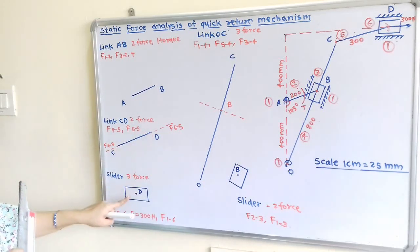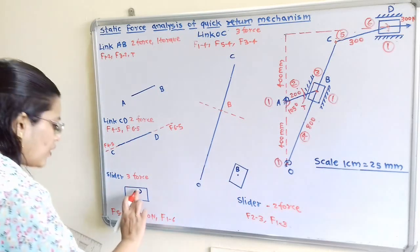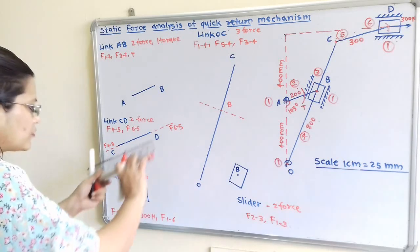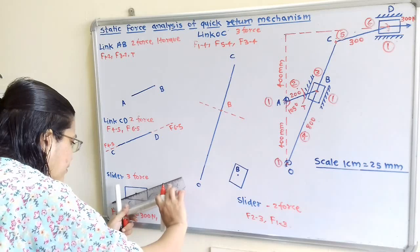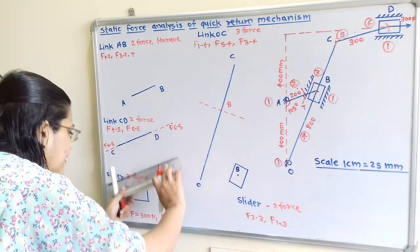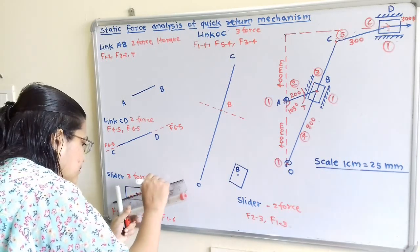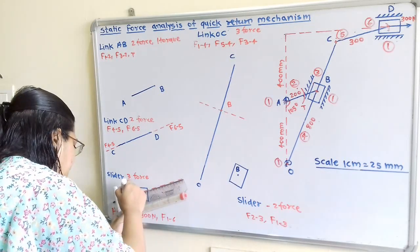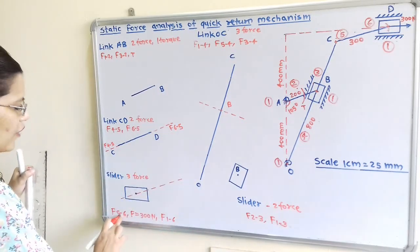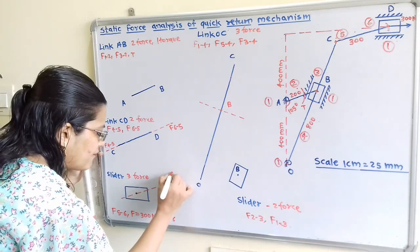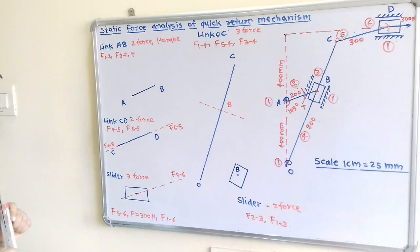For the slider at point D, we draw the parallel line of action of force through point D. The force F of 6 to 5 is shown, and F of 5 to 6 is equal in magnitude but opposite in direction.